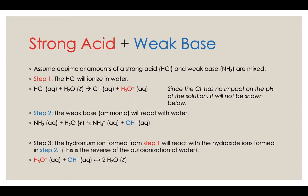In step one, we have hydrochloric acid ionizing in water. Because hydrochloric acid is a strong acid, it 100% ionizes into chloride and hydronium ions. Then we have our weak base ammonia that reacts with water. Because ammonia is a weak base, it doesn't ionize much — it makes some ammonium and hydroxide ions, but not many. That's why in step two, the arrow pointing to the left is longer than the arrow pointing to the right.